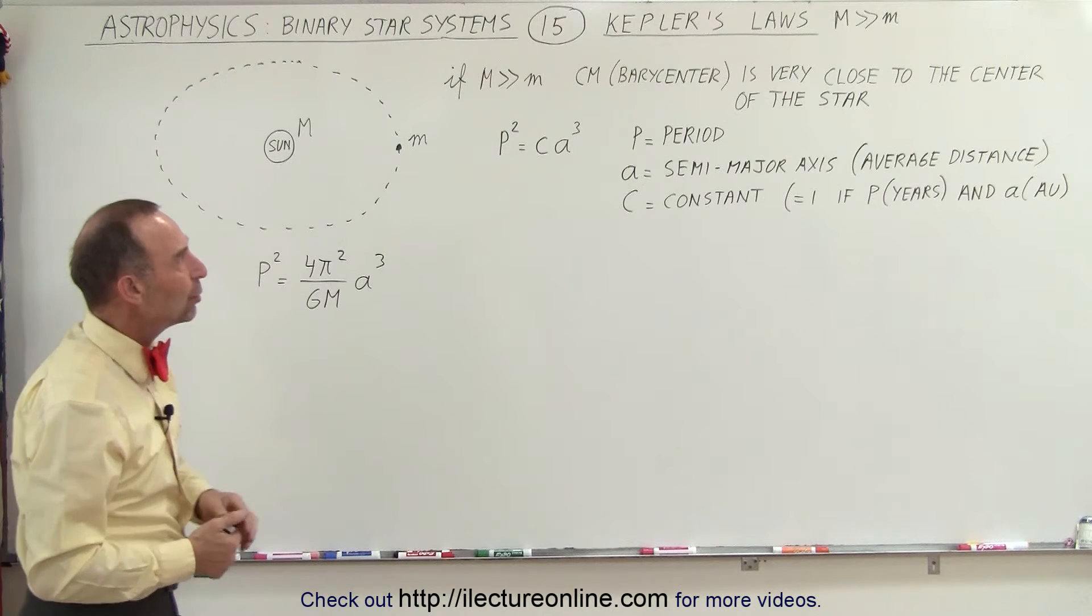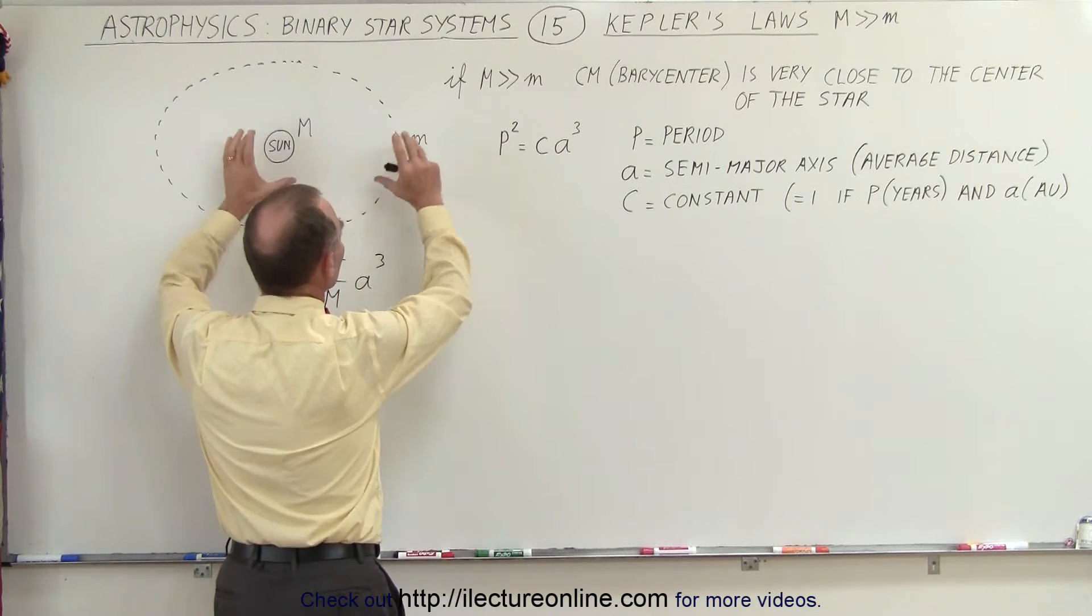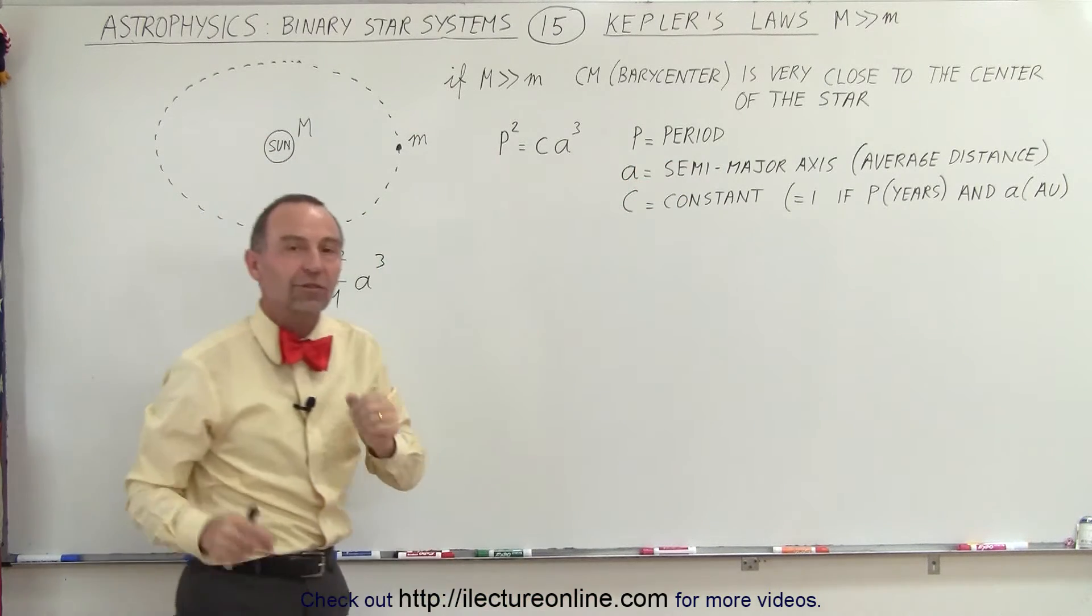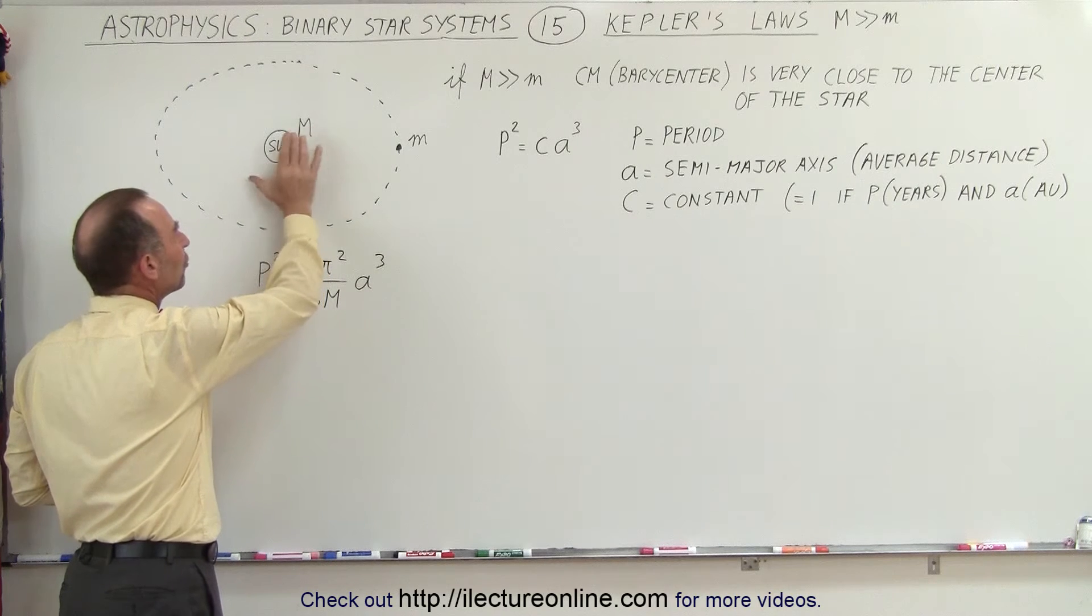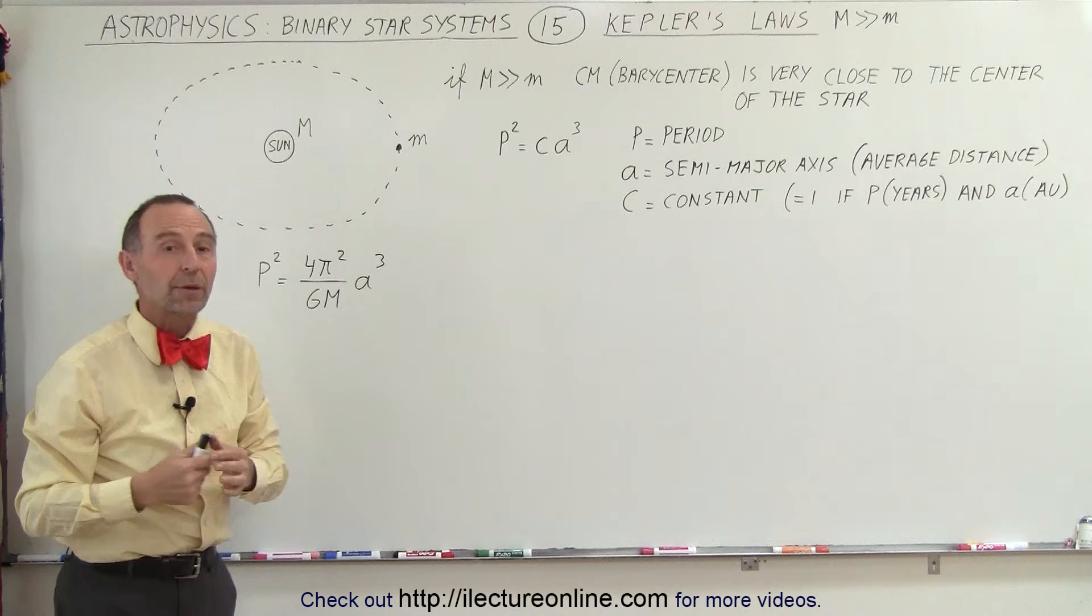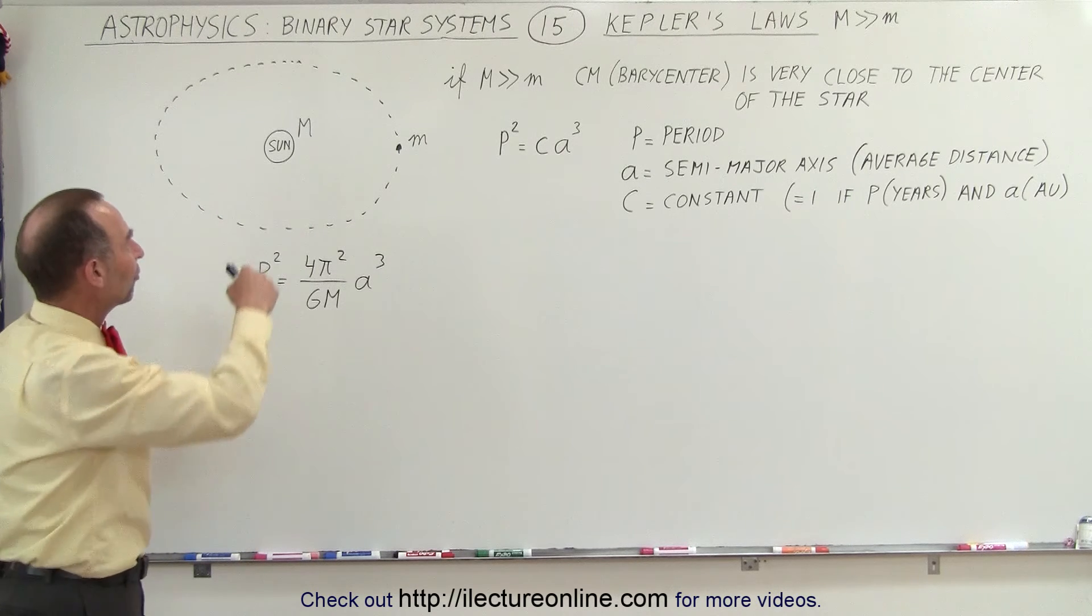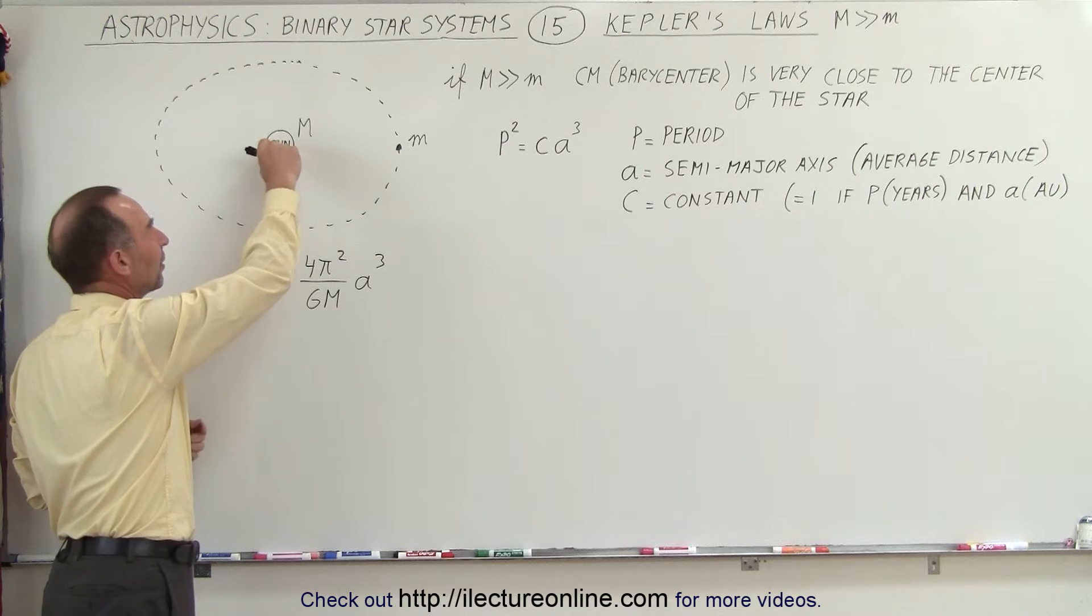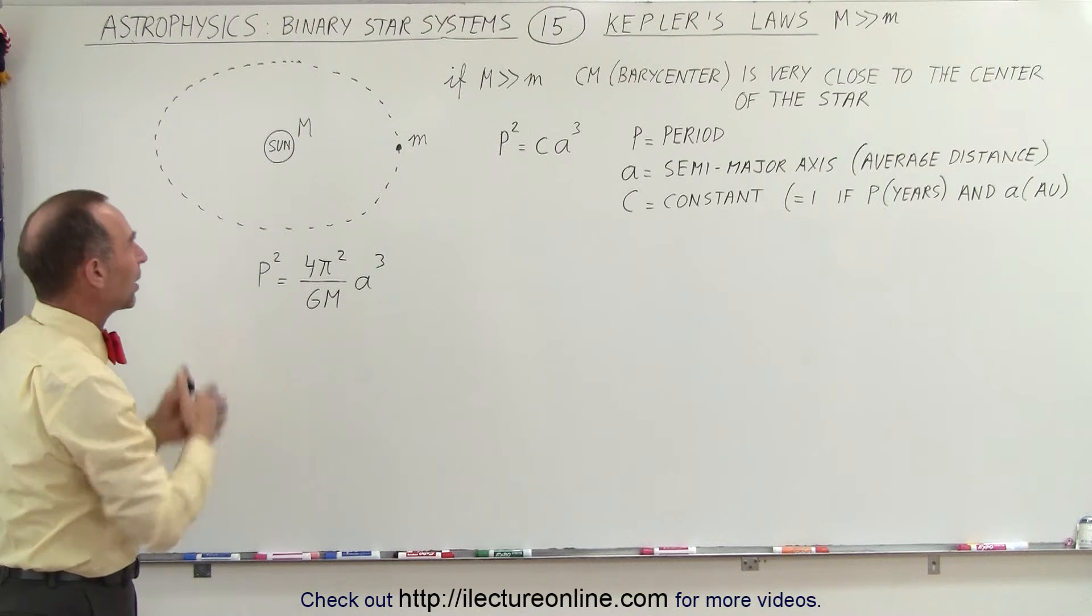Now if that's the case, we know that the barycenter, which is the center of mass of the star-planet system, is very close to the center of the star in such a way that you probably will not be able to measure the movement of the star using spectroscopy, the recession and approaching velocities of the star as it moves around the barycenter. If the barycenter is really close to the center of the star, you will not be able to detect that.